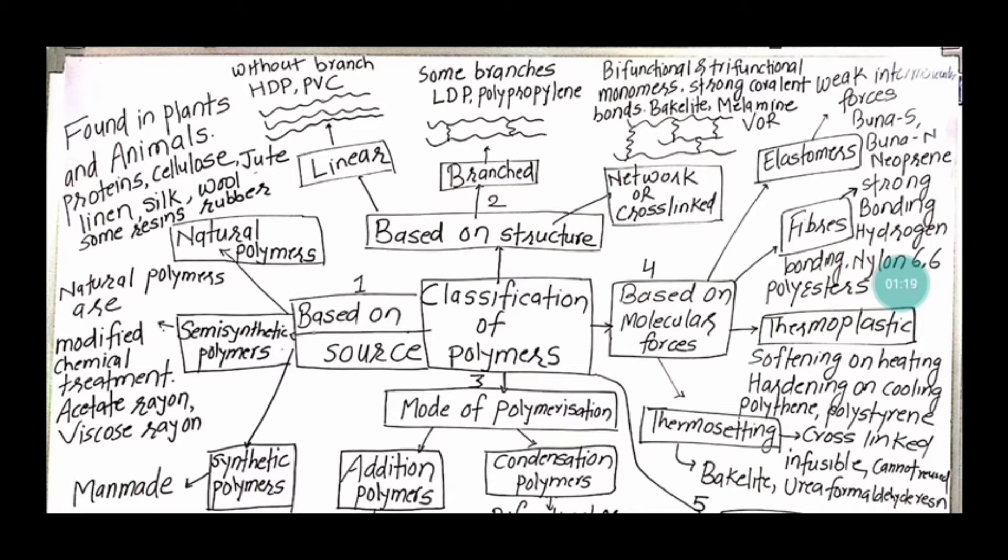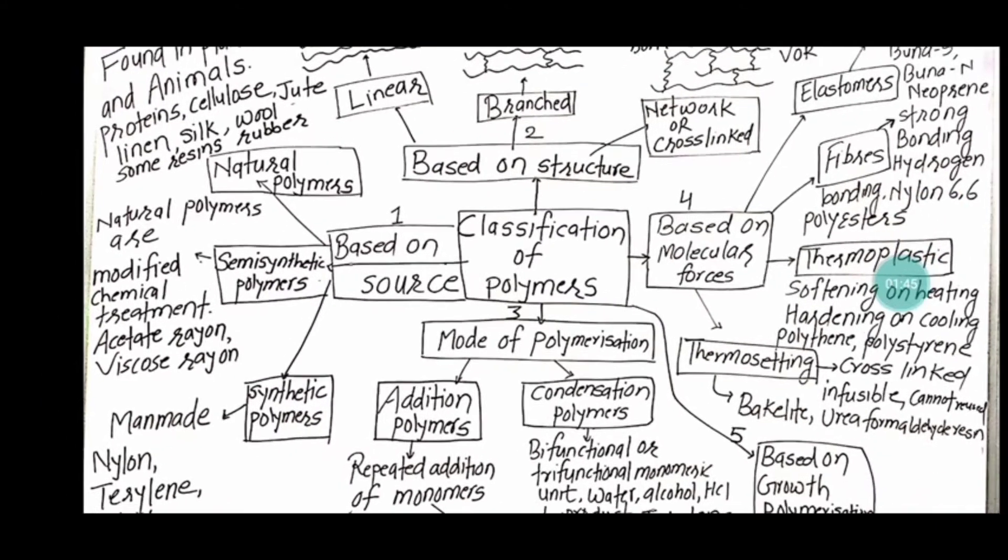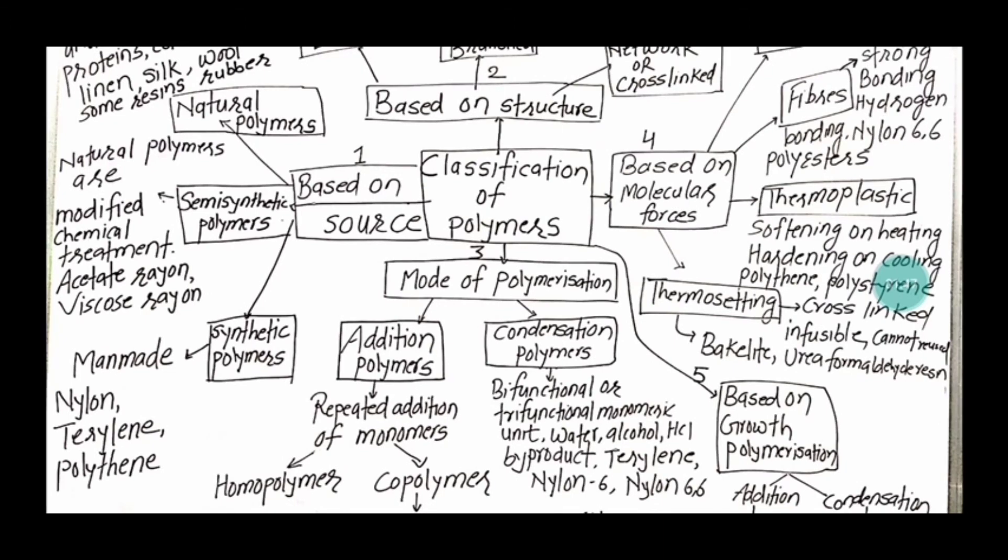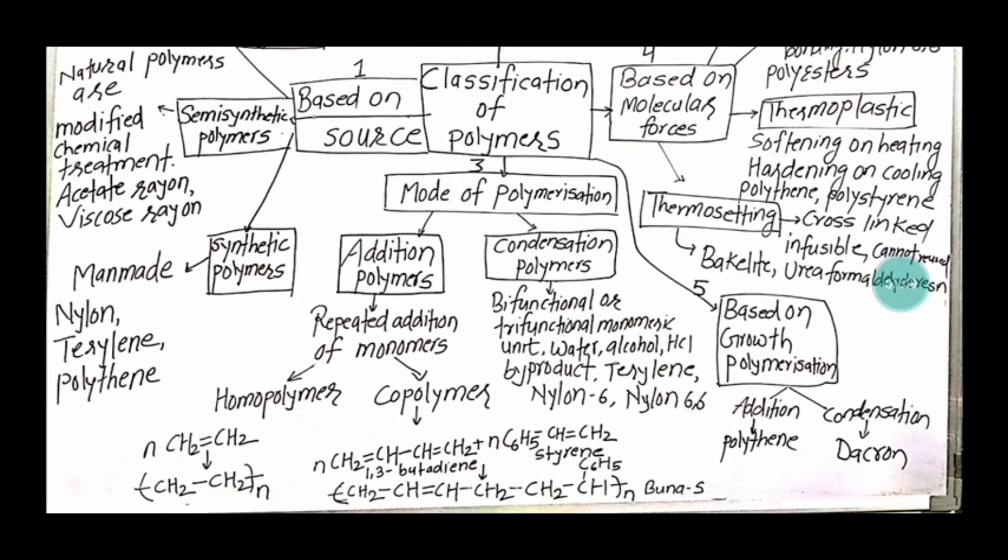In branched, they are having some branches, for example low-density polythene or polypropylene. Network and cross-linked polymer is bifunctional or trifunctional monomers having strong covalent bonding, example we have bakelite, melamine, or vulcanization of rubber. Then we classify polymers based on its mode of polymerization.